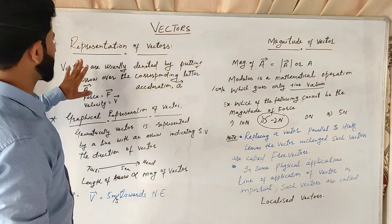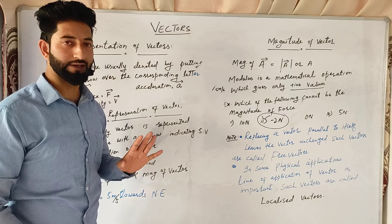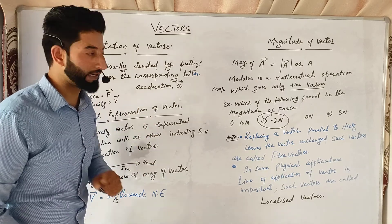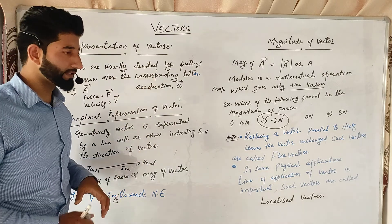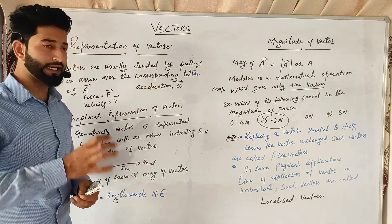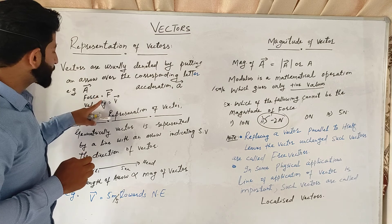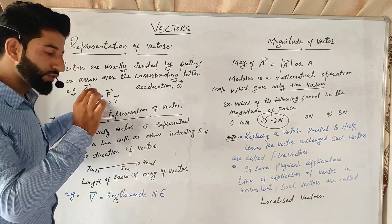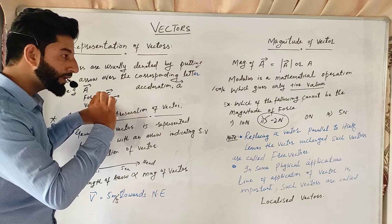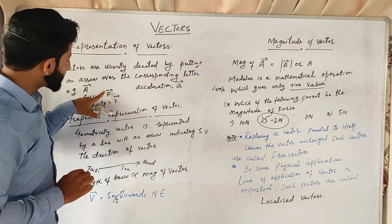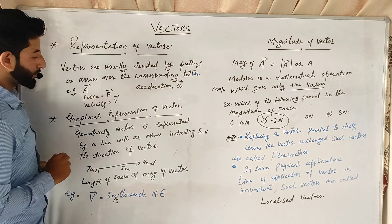Today we will talk about how we represent vectors — what will be the representation of vectors. We usually denote vectors when we know that a quantity is a vector. For example, force is a vector quantity. The symbol for force is F, and we put an arrow on top of it. This arrow indicates that this force is a vector quantity.